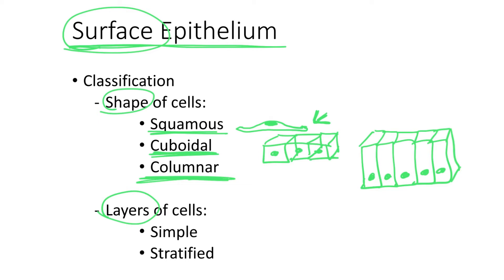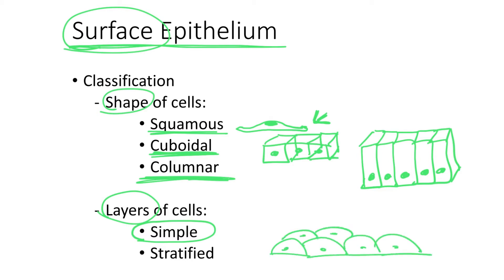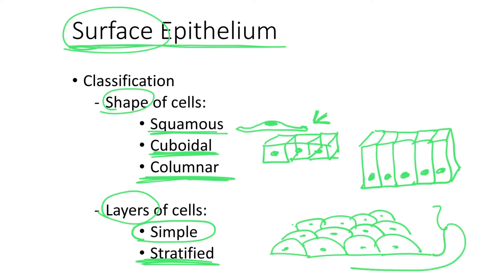According to the number of layers: if we have a single layer of cells, that is named simple. And if we have several layers of cells on top of each other, this is called stratified, because strata means layers. So if you have stratification, that means several layers, and the name of the epithelium that has several layers of cells is stratified.